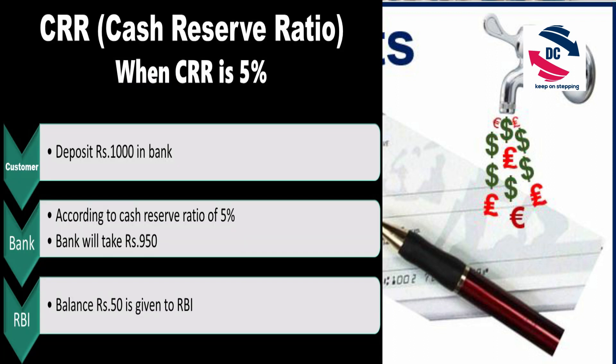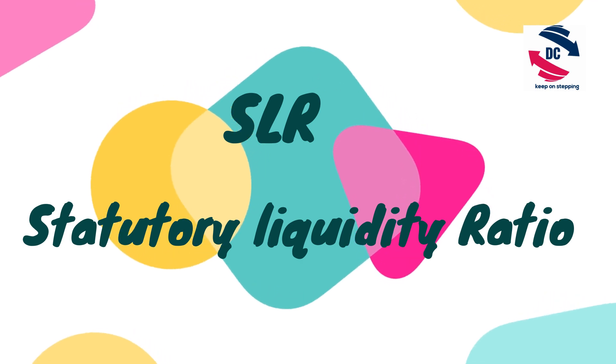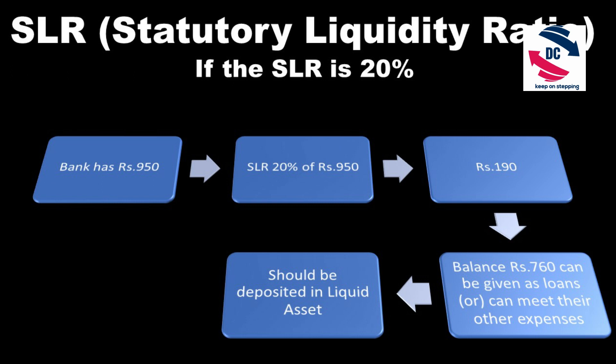Liquid assets can be government bonds, gold, and so on. The exact amount to be invested in liquid assets is decided by SLR, the Statutory Liquidity Ratio. If SLR is 20%, then 20% of the deposited amount must be invested in liquid assets. The remaining amount can be used for daily expenses or giving loans. If a depositing customer needs money back, the bank can sell the liquid assets to RBI and return that money.